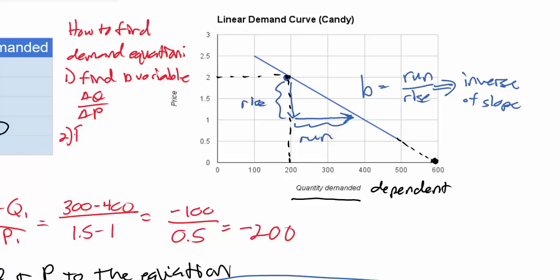Two, you find the a variable. And to do that, you choose any point on the demand curve and solve for a.